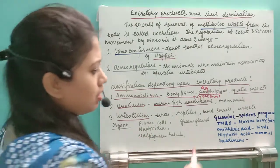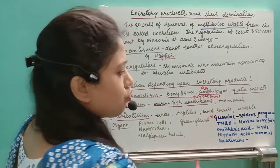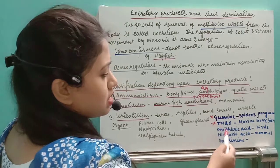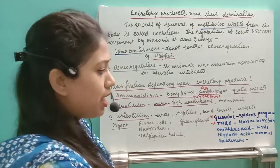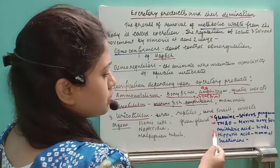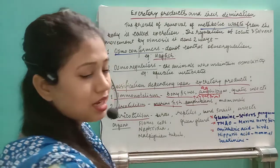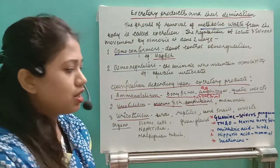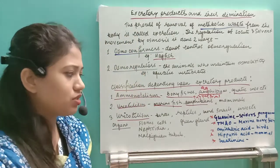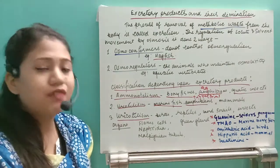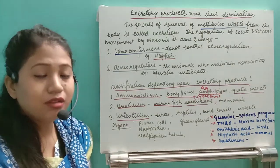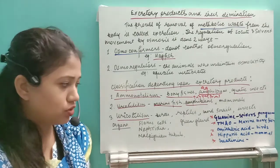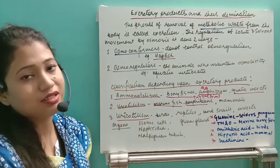There are also other types of waste products. Guanine is released by spiders and penguins. Trimethylamine oxide (TMAO) is released by some marine bony fishes. Ornithuric acid is released by birds. Hippuric acid and creatinine are released by mammals. If the creatinine level becomes higher, it indicates a kidney problem or kidney damage in humans, so creatinine acts as an indicator.